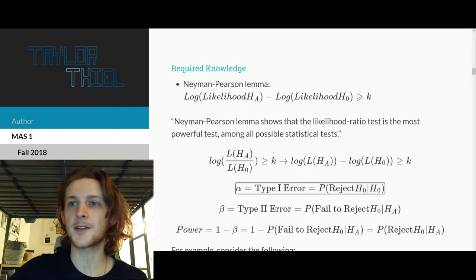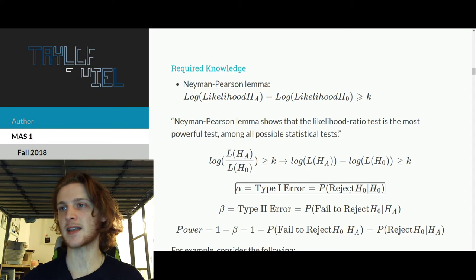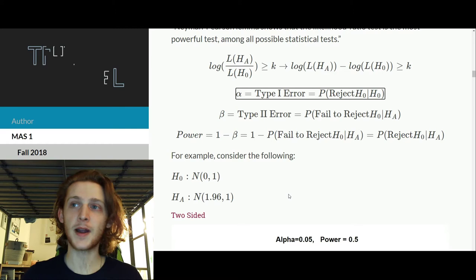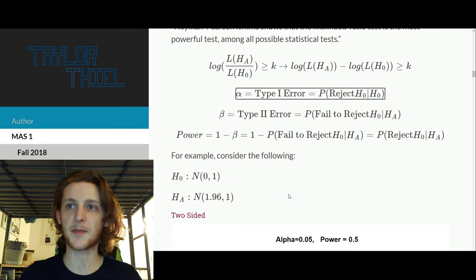So first off, alpha is the thing that everyone's familiar with, which is the probability you reject the null given the null is true. So this is to say, whatever you're assuming to be the case, you accidentally reject it. Now, similar to that, you could consider type 2 error, which is you fail to reject the null, or you kind of go along with the status quo, even though the alternative hypothesis is true. So this is the different type of error you can have.